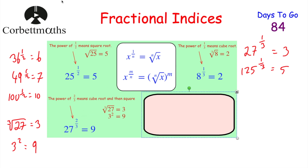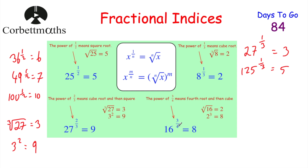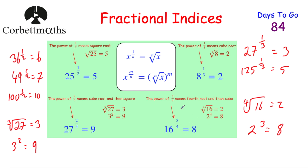Another example: 16 to the power of 3/4. Denominator is 4, so take the fourth root of 16 = 2 (because 2 × 2 × 2 × 2 = 16). Then the numerator is 3, so do 2 cubed = 8. So 16 to the power of 3/4 equals 8. Whenever you have fractional indices, the denominator gives the root and the numerator gives the power.